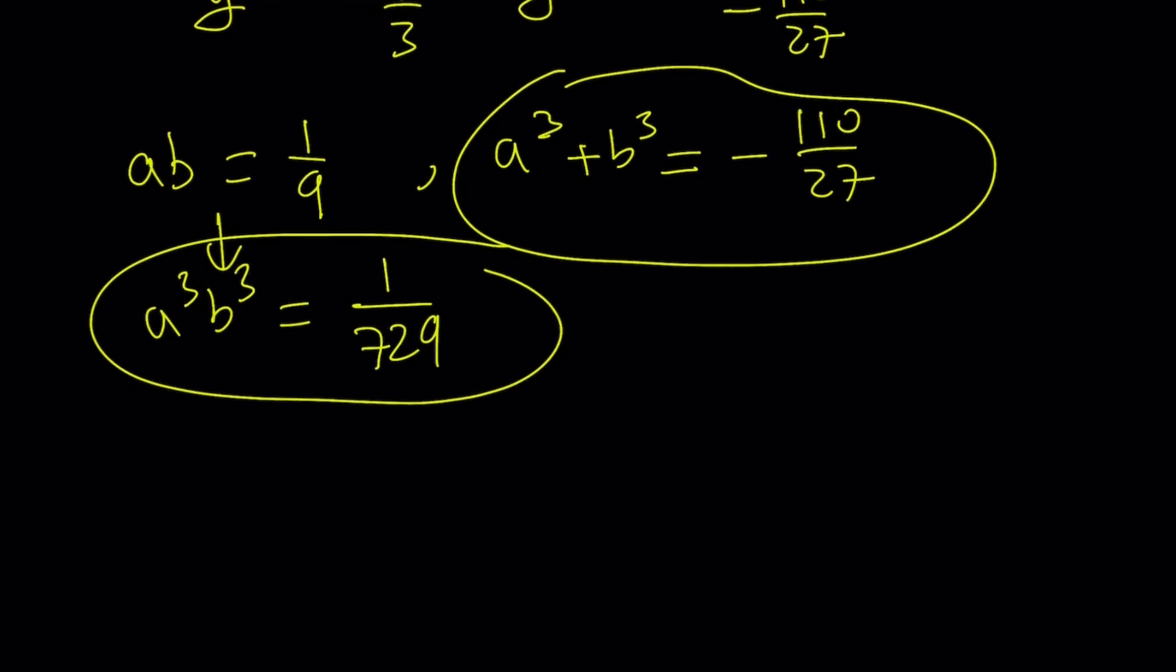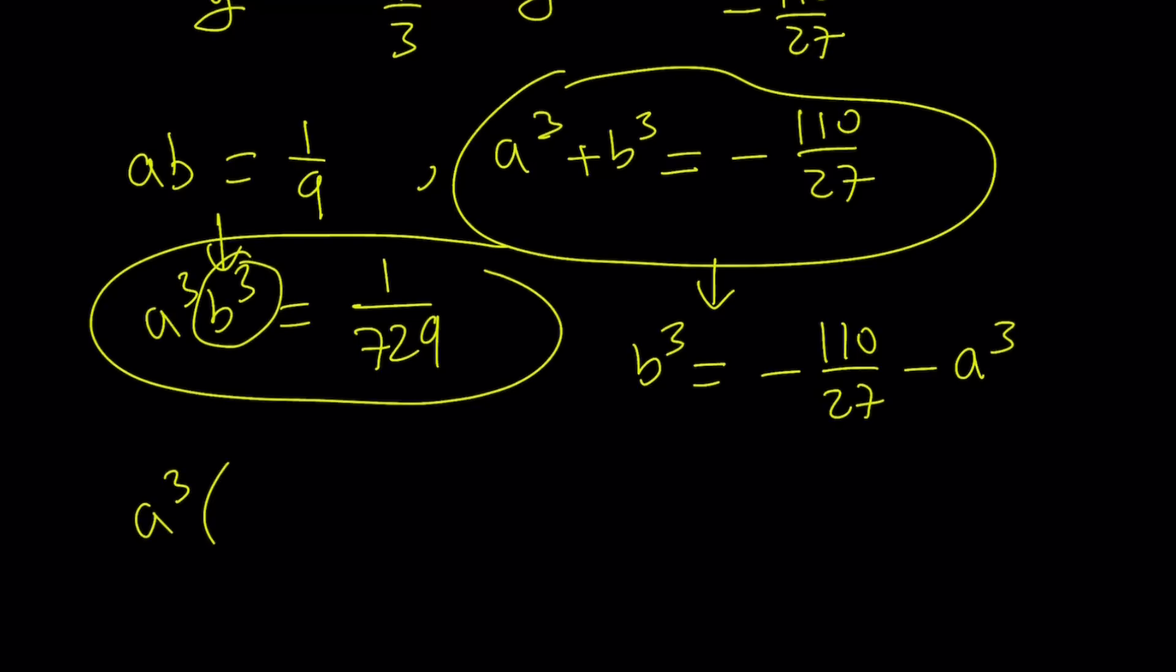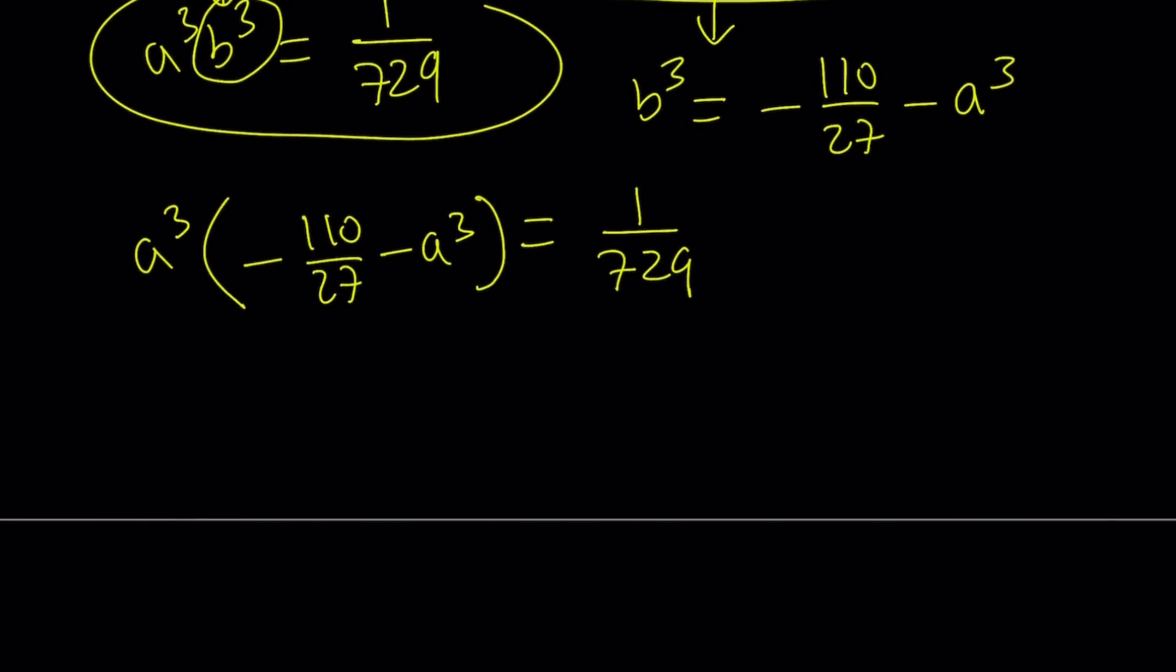This is a system which can be made quadratic. Let's replace b cubed with negative 110 over 27 minus a cubed. I'm going to plug it in here. That's going to give me a cubed times negative 110 over 27 minus a cubed, and then the product equals 1 over 729. If you distribute this and put everything on the same side, you get a to the 6th power plus 110 over 27 a cubed plus 1 over 729 equals 0.